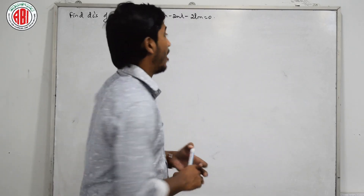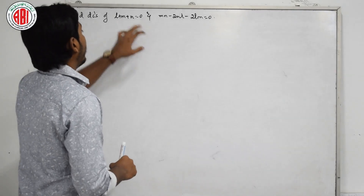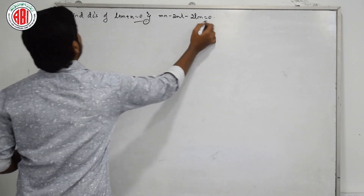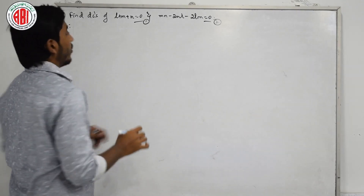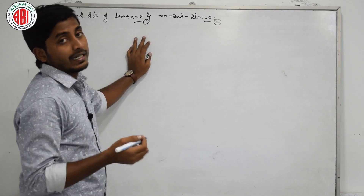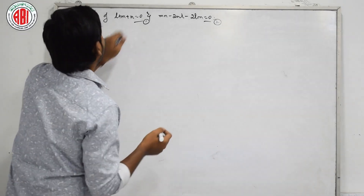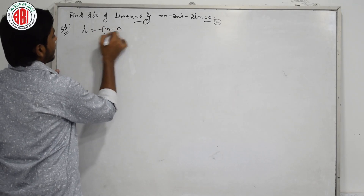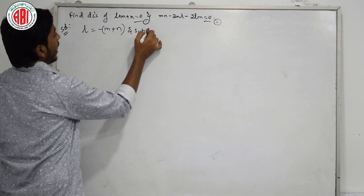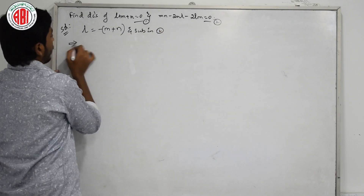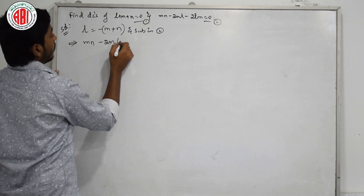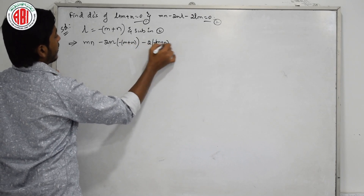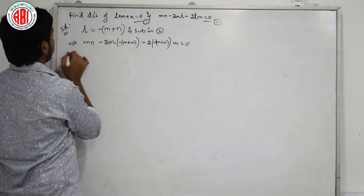Let us solve one more problem on how to find DCs when L, M, N are related with two equations. Let us take this as equation 1 and equation 2. We will take L equal to minus M minus N and substitute in equation 2. So we get: MN minus 2 into minus of (M plus N) minus 2 times minus of (M plus N) into M equals 0.